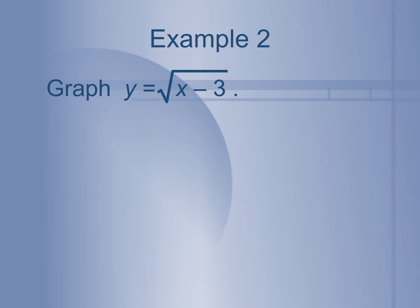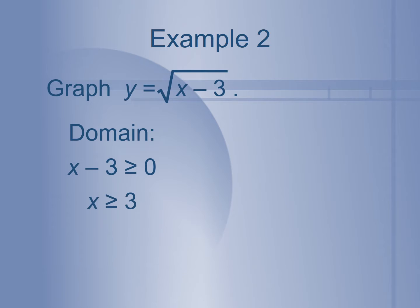For example, y equals the square root of x minus 3. To figure out our domain, we take our radicand, which is x minus 3, and set it greater than or equal to 0. Solving for x, we add 3 to both sides. So our domain has to be x greater than or equal to 3, which means when we draw our graph, we take our parent function and shift everything 3 to the right.